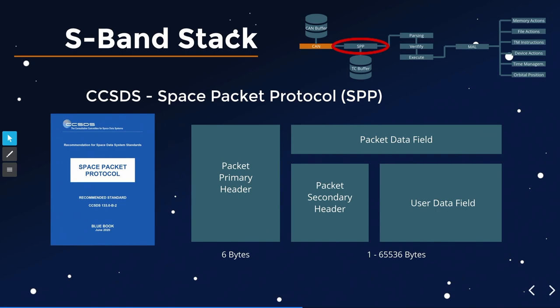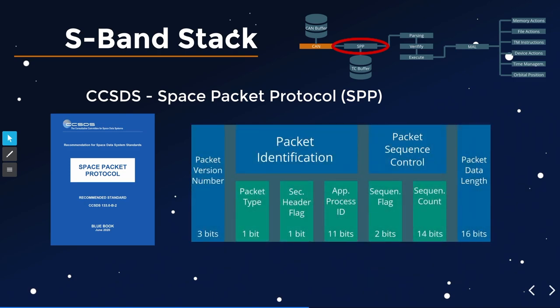The Space Packet Protocol has a rather simple structure: a primary header, an optional secondary header, and user data. The primary header includes a packet version number, packet identification (packet type, secondary header presence flag, and Application Process ID — similar to port numbers, directing packets to different listeners on the satellite), packet sequence control with a sequence flag and counter, and a length field.